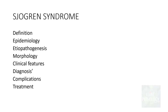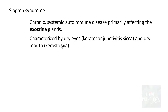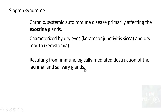We will look into the definition, epidemiology, etiopathogenesis, morphological features, clinical features, and diagnosis of Sjogren's syndrome. Sjogren's syndrome is a chronic systemic autoimmune disease which primarily affects the exocrine glands, predominantly involving the lacrimal and salivary glands, leading to dry eyes — that is keratoconjunctivitis sicca — and dry mouth, which is xerostomia, due to immunologically mediated destruction of these glands.